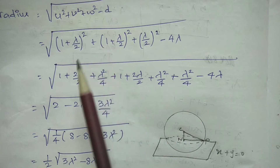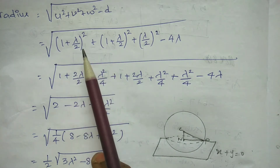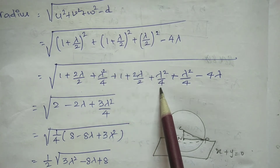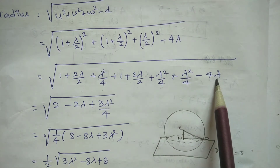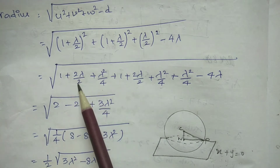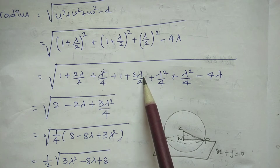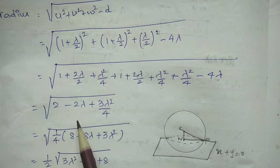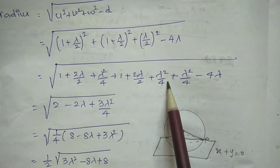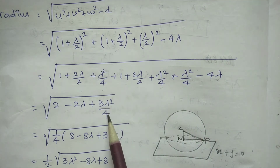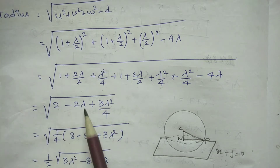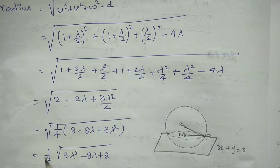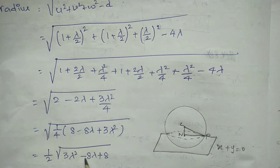Using the (a+b)² expansion: (1+λ/2)² = 1 + 2λ/2 + λ²/4 = 1 + λ + λ²/4. The lambda terms combine: 2λ − 4λ = −2λ. The lambda square terms: λ²/4 + λ²/4 + λ²/4 = 3λ²/4. So inside the root we have: 1 + 8 − 8λ + 3λ², giving radius R = √(3λ² − 8λ + 8).